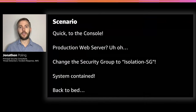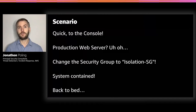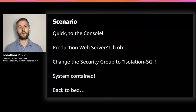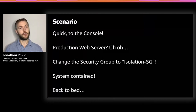You log into the AWS console and navigate to the involved EC2 instance. This is not good — it's a critical production web server. Should you shut it down? You remember there's an isolation security group set up by security staff with no rules, which allows no inbound and outbound traffic. You change the security group to the isolation SG on the instance and send out an email to the group: the system has been contained. That was close, but it should at least buy you some time until you get back into the office on Monday to investigate.